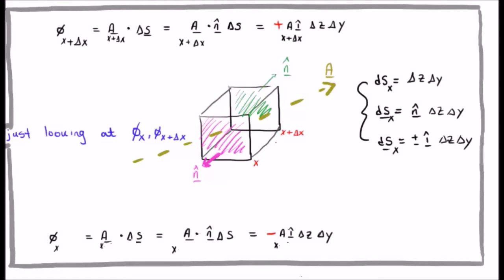So we know that delta s sub x is going to be delta z delta y. So the infinitesimal area element or the vector infinitesimal area element delta s sub x is going to be n hat delta z delta y. Now we know that this n hat can be plus or minus i hat depending on the direction of the face. So delta s sub x the vector surface area element is plus or minus i hat delta z delta y.